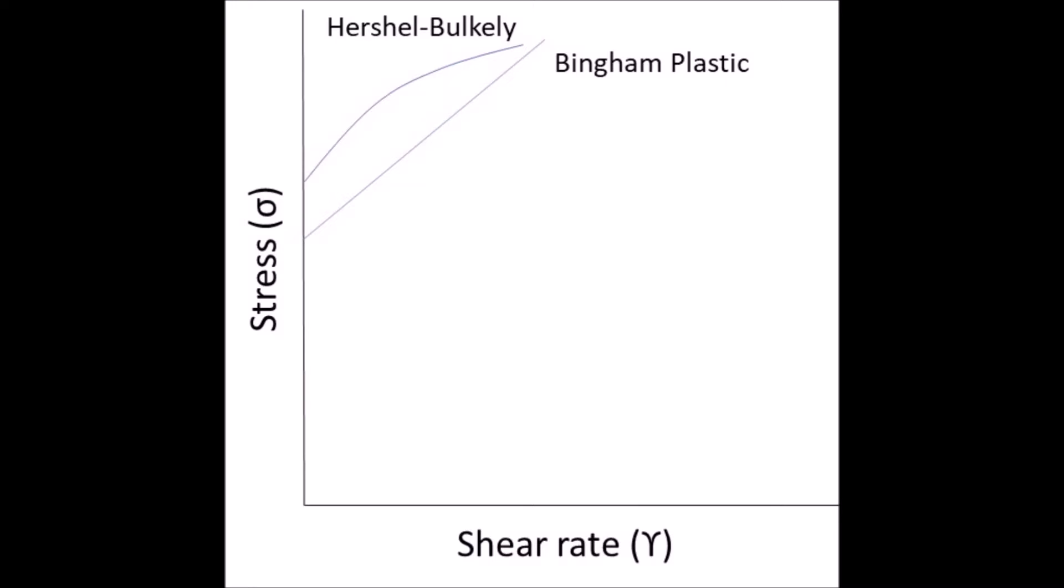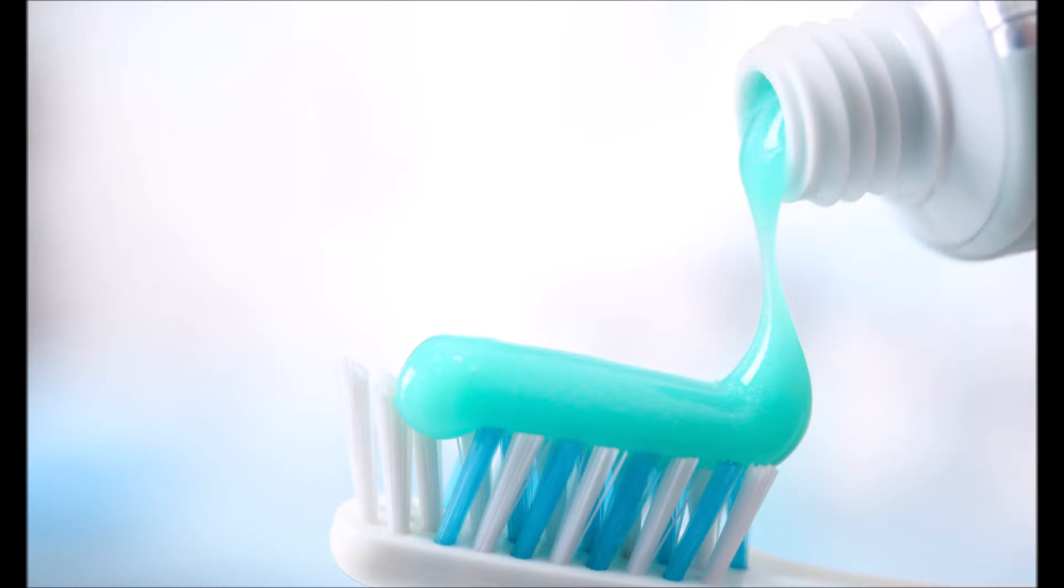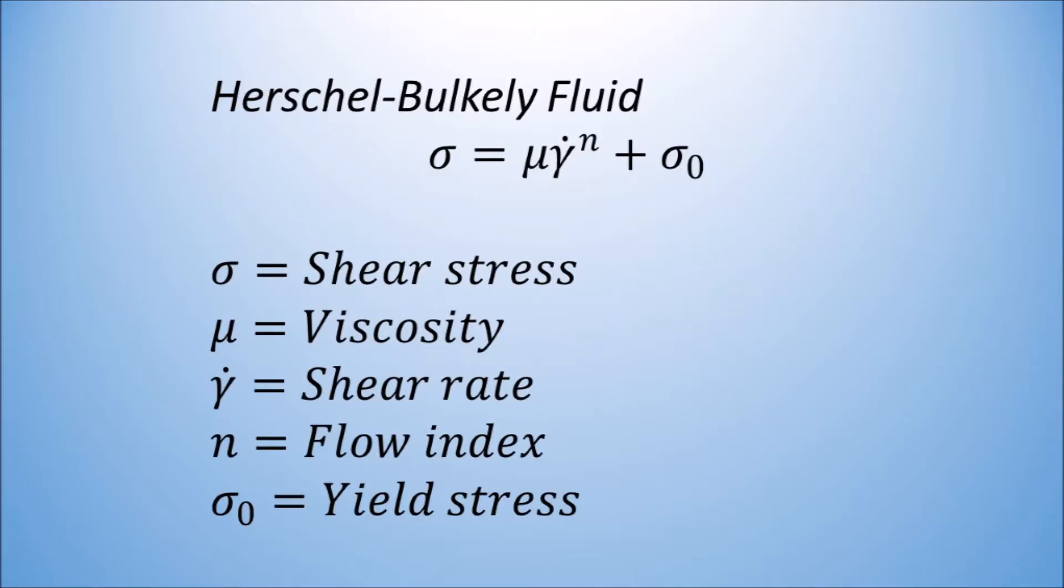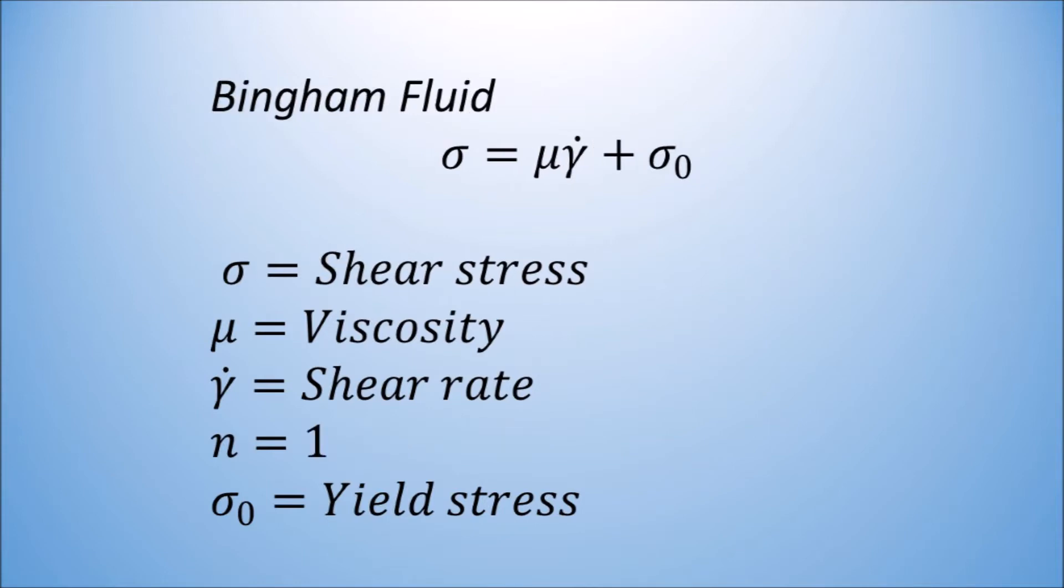One example of a Bingham plastic is the toothpaste that you used to polish your grill this morning. An example of a Herschel Bulkley fluid would be peanut butter. Bingham plastic and Herschel Bulkley fluids follow the same formulas for Newtonian and power law dynamic fluids with the addition of an extra term used to account for the yield stress.